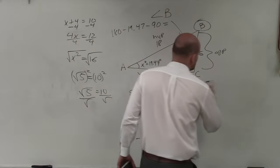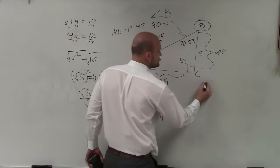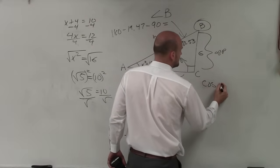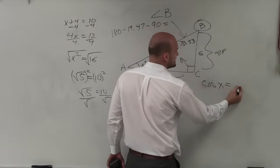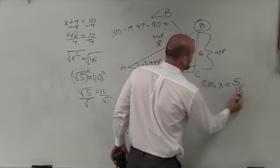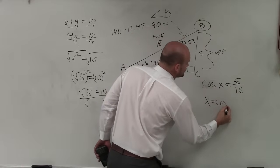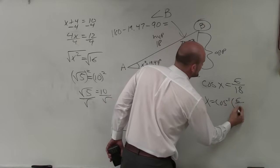cosine of my angle x, which I'm pretending I don't know, is equal to 6 over 18. So therefore, x equals cosine inverse of 6 over 18.